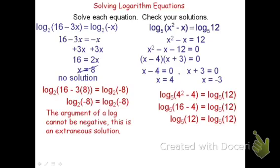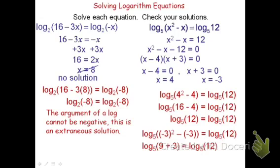Checking x equals negative 3: negative 3 squared is 9, and minus negative 3 becomes plus 3, giving 9 plus 3, or 12. Both arguments are positive, so x equals negative 3 is also a valid answer. Don't make the mistake of rejecting an answer just because x is negative — you have to check it in the actual equation. If it gives a positive argument, it's a valid solution.